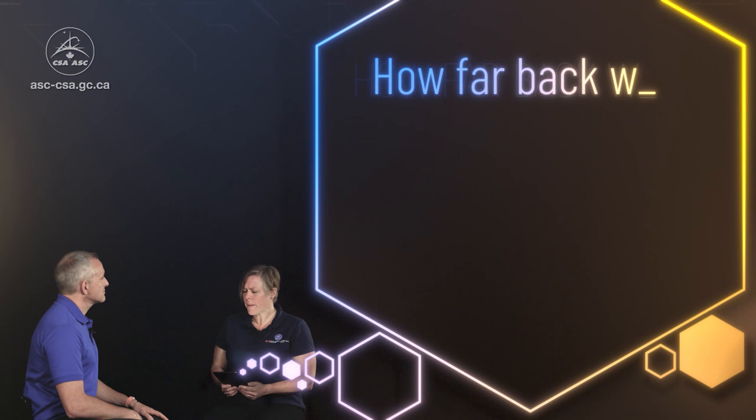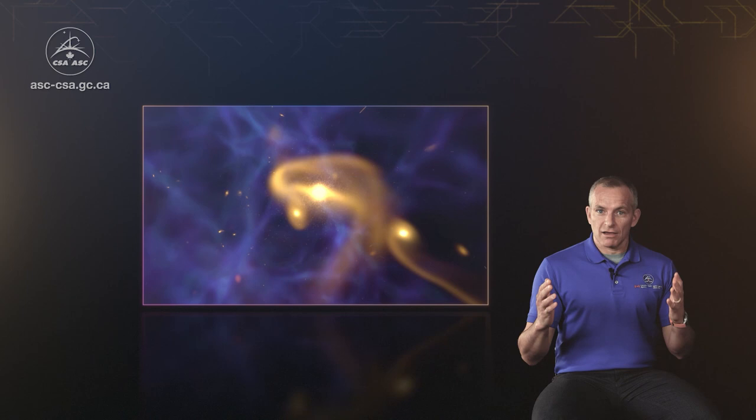How far back will the James Webb Space Telescope see? Webb will be able to look back in time and observe the ancient light of the early universe when it was still a baby, merely a few hundred million years old. That's actually over 13 and a half billion years ago.